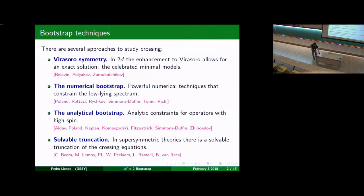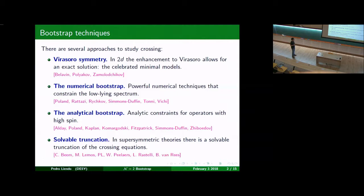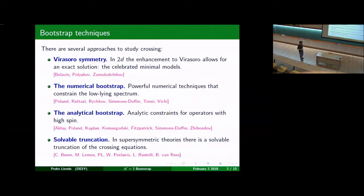Let's have a quick overview of the bootstrap techniques discussed in the previous lectures. We have, of course, the classic example of Virasoro symmetry, the success story of the bootstrap program. We have the numerical techniques. We have the solvable truncation present in supersymmetric models that Maddalena just told you about. And there is also another approach which has been very successful, which is called the analytic bootstrap. The idea is that CFTs in the limit of large spin simplify. You can solve CFTs in the limit of large spin and then calculate corrections as inverse powers of one over L, one over the spin.